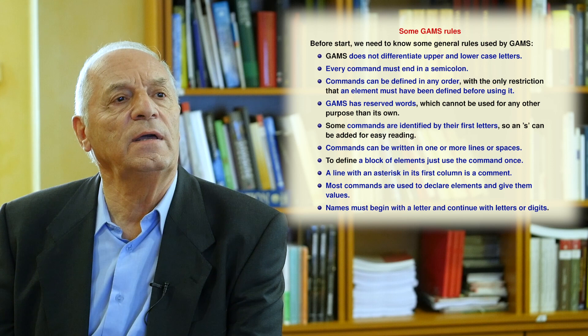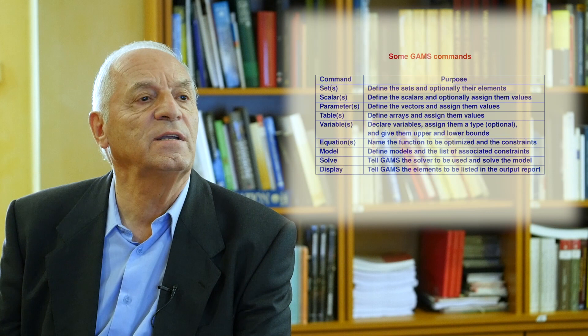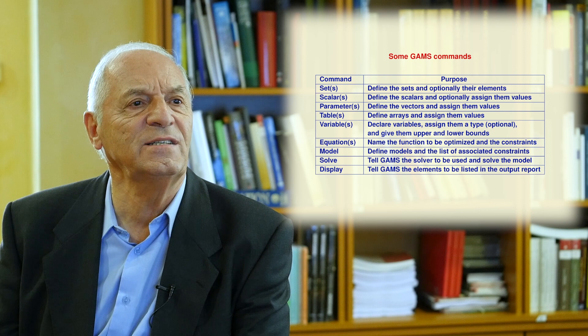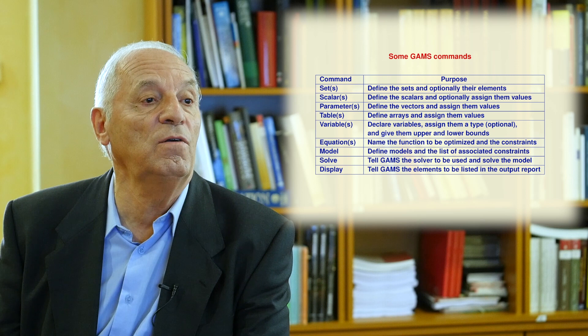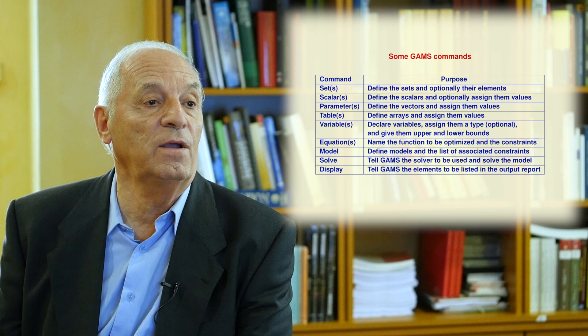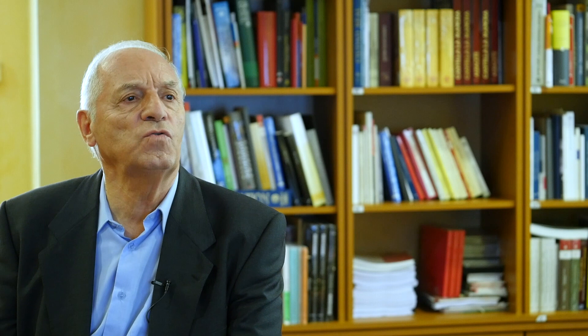Because we want students to be able to use the GAMS code, we will describe some general rules and commands for GAMS. We will describe commands for defining data — sets, scalars, parameters and tables. We will describe the variable commands to define variables, the equations commands to define constraints and the objective function, and the model and solve commands to define and solve a model. Finally, the display commands to explain how to get the results.